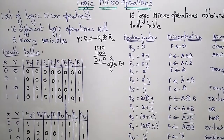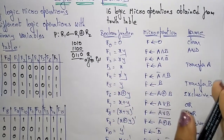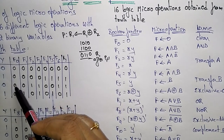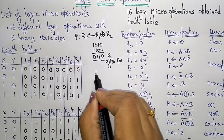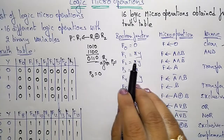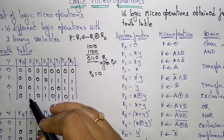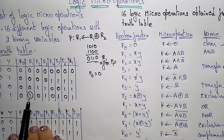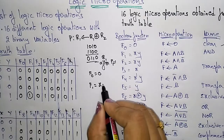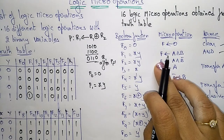Using this truth table we can derive the 16 logic micro operations. Each entry has a boolean function, a micro operation, and a name. F0 is all zeros, so F = 0 — a clear operation. For F1, the value 1 appears only when X=1 and Y=1, so F1 = X AND Y. This is the AND operation, and the result is stored in F1.